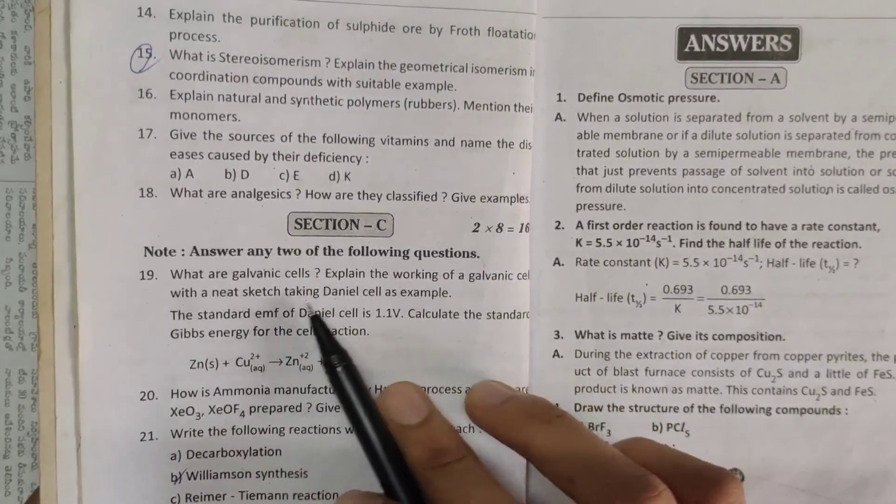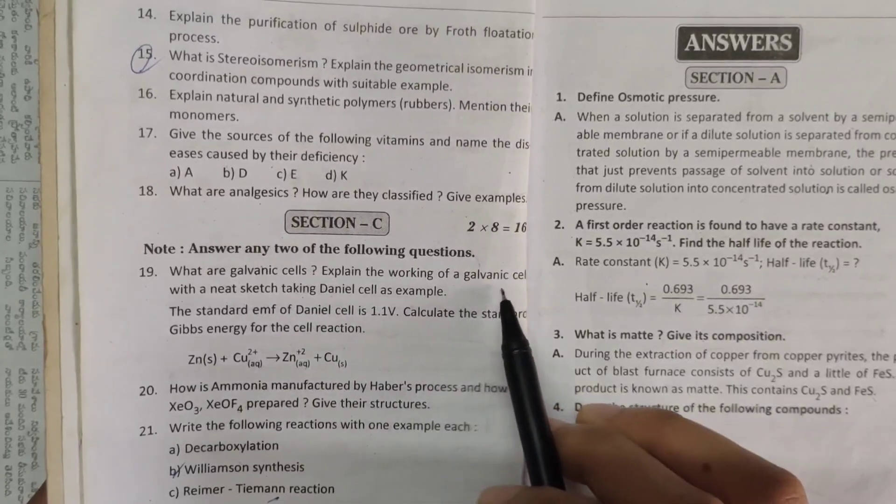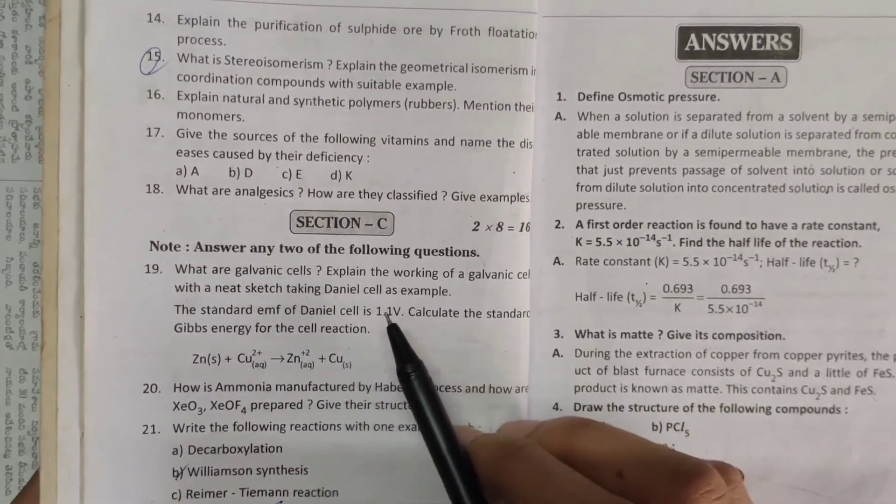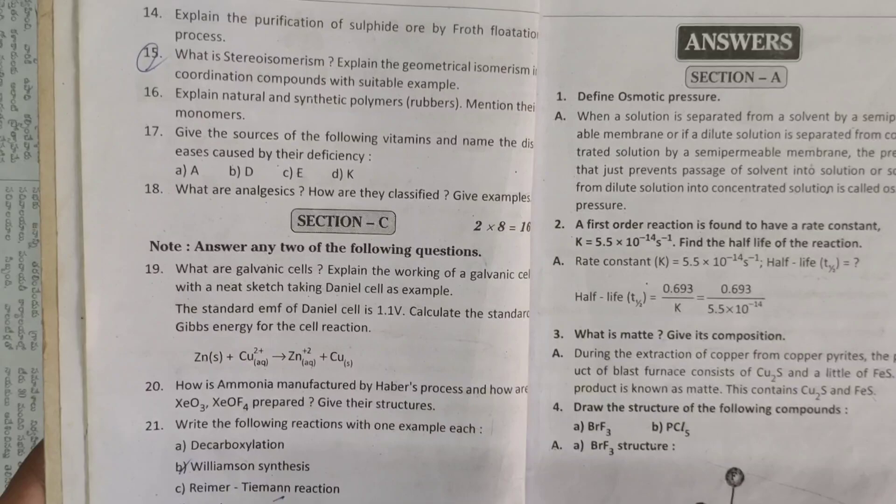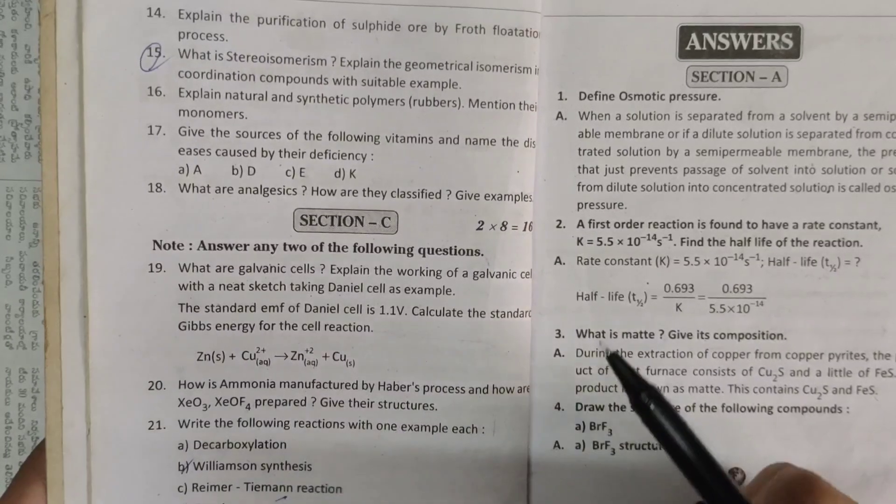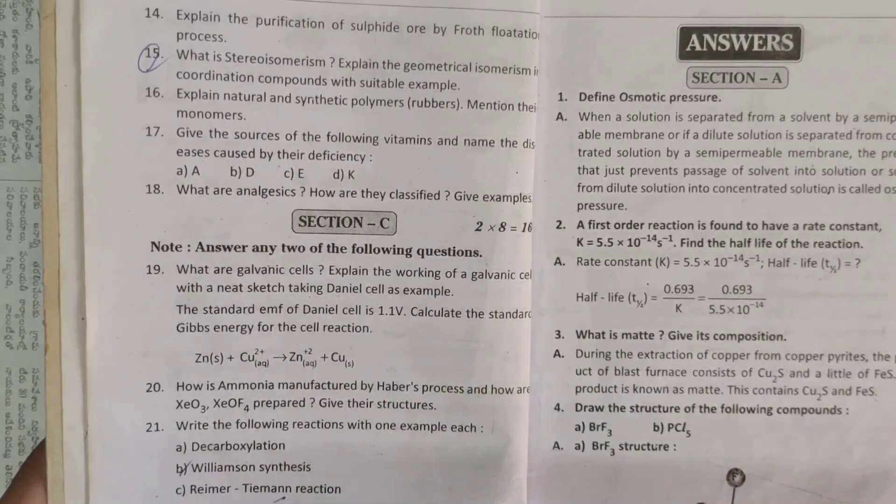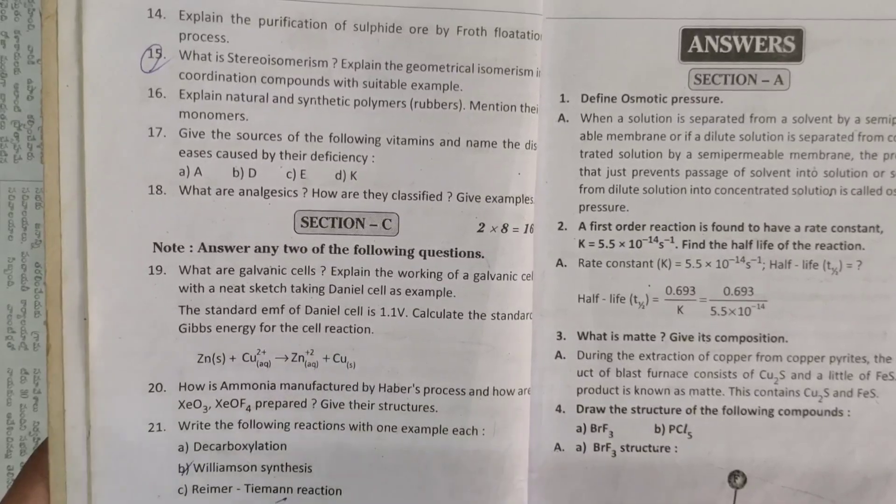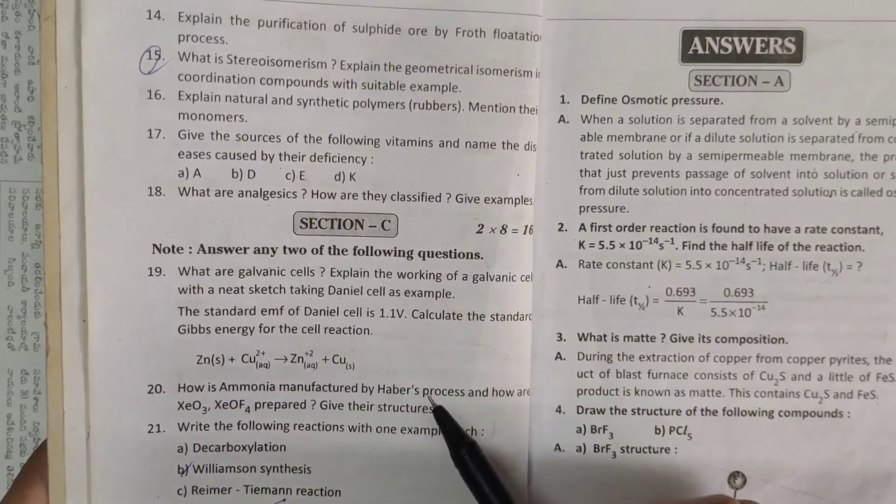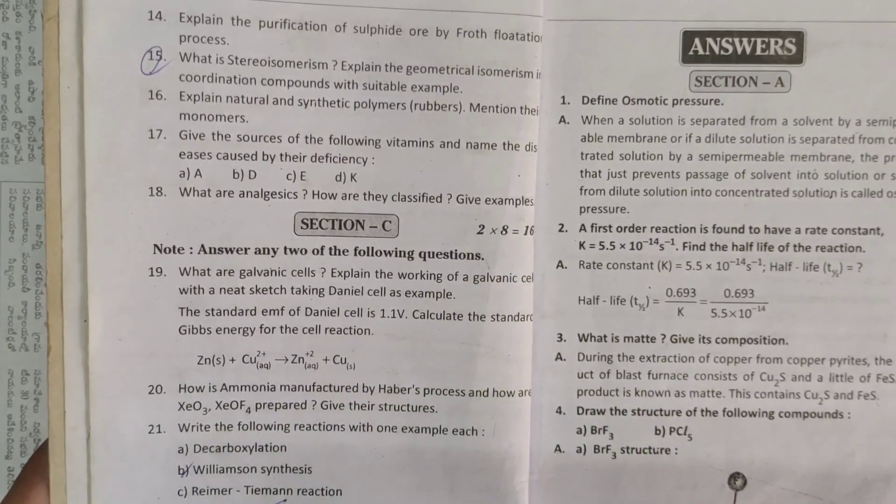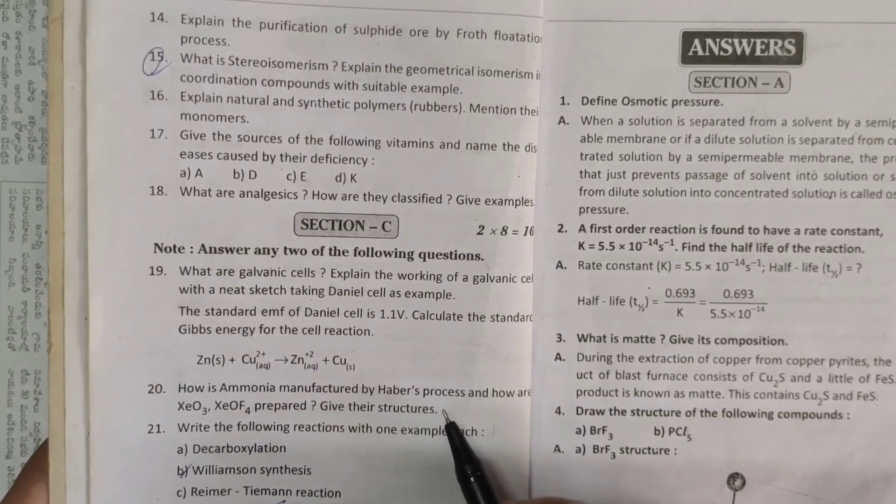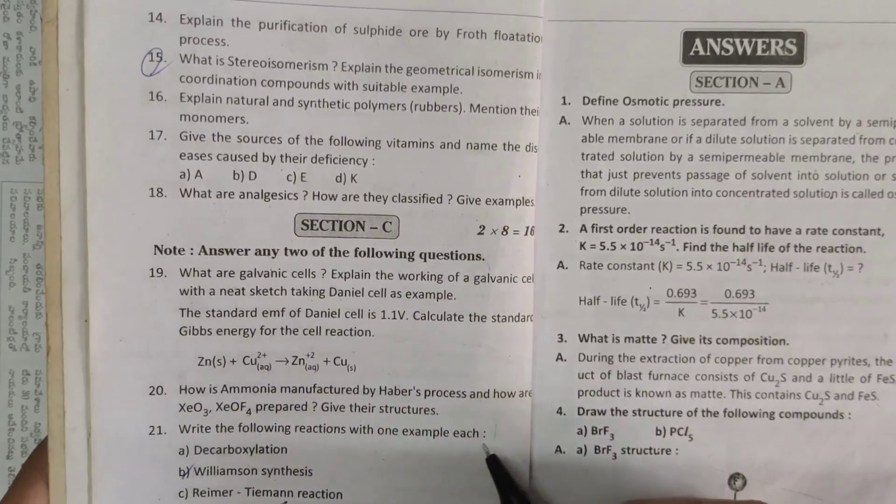What are galvanic cells, explain the working of galvanic cells with a neat sketch, taking Daniel cell as the example. Okay, diagram must be drawn properly. At the same time, there's a problem also. The standard EMF of Daniel cell is 1.1 volt, calculate the standard Gibbs energy of the cell reaction. So you may know the problem is related.